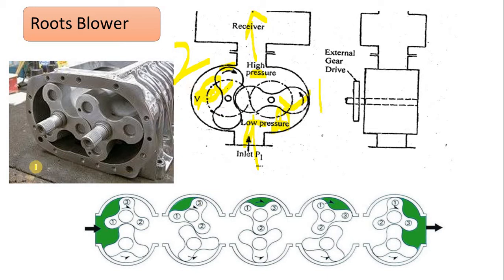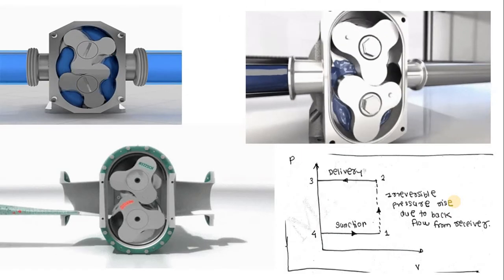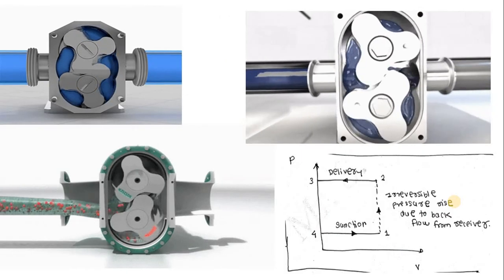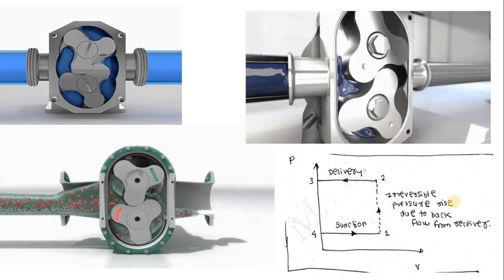Here you get an idea about the multi-stage root blower compressor, where a number of root blower compressors are arranged in series in order to achieve high pressure and high discharge at the end. Continuously the pressure increases when the air passes through the various sets of root blower compressors arranged in series.